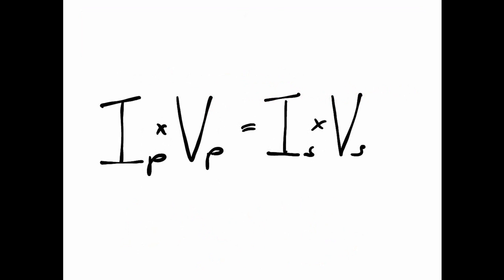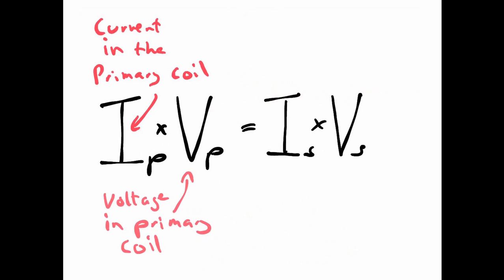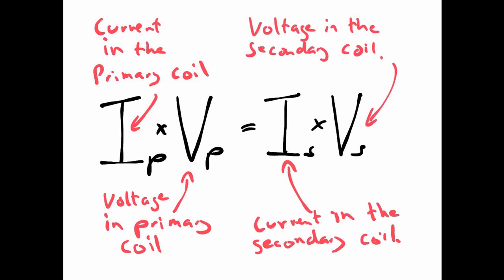Okay, this is the second equation we need to be aware of. We've got the current in the primary coil and the voltage in the primary coil. So on the left-hand side there, that's power, the power going into our transformer. And the voltage of the secondary coil and the current of the secondary coil, that's the power going out. And if our transformer is 100% efficient, the power going in is going to equal the power going out.